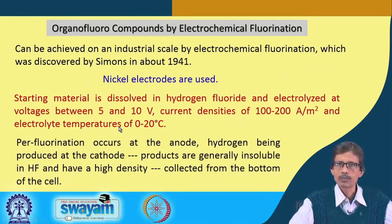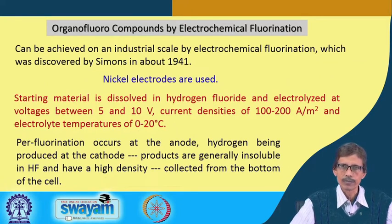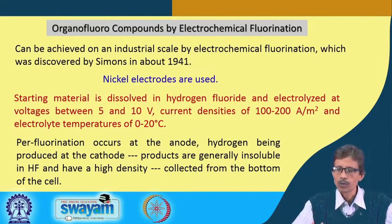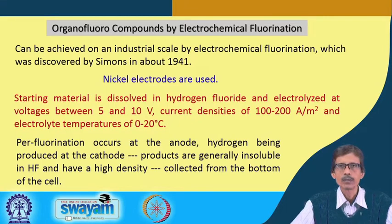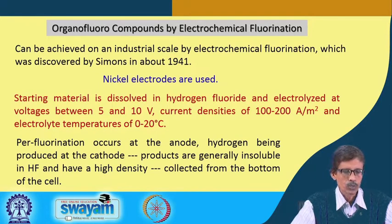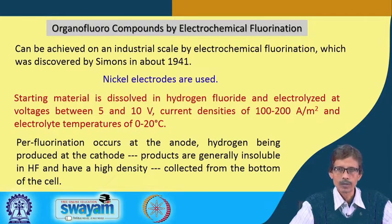This process is cost-effective and is widely used for fluorination reactions. You can go for substitution of one hydrogen on the carbon center by fluorine, and sometimes a perfluoro compound is made where all C-H functions have been substituted by fluorine. The fluorination occurs at the anode, while hydrogen is produced at the cathode as a byproduct, since you are using hydrofluoric acid.